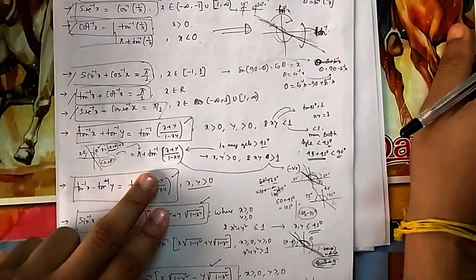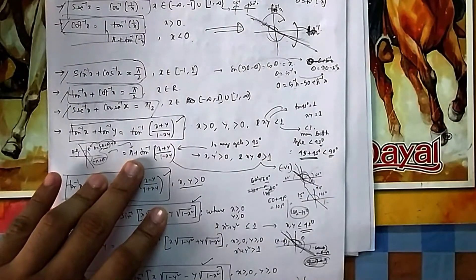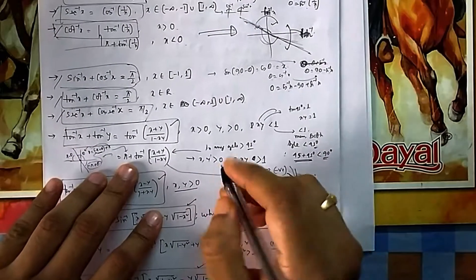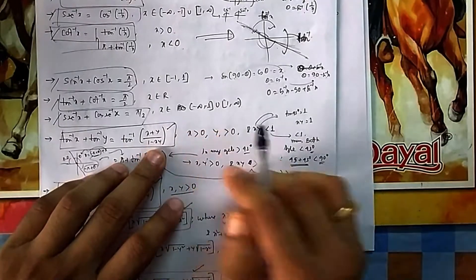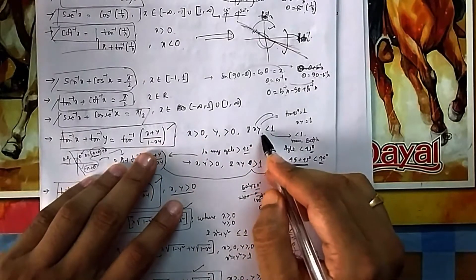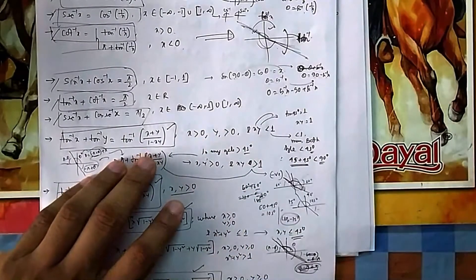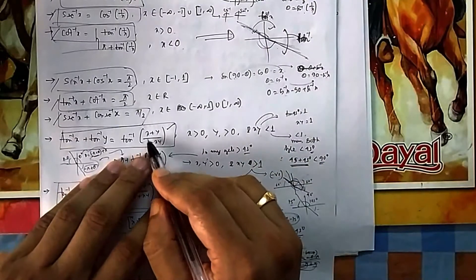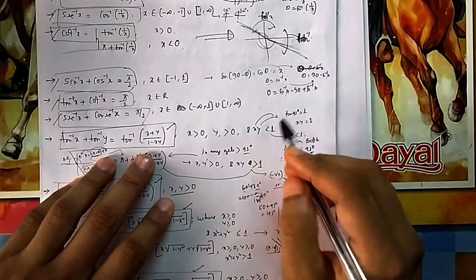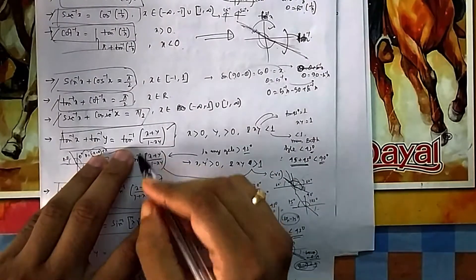But for advanced and intermediate level, you need one more condition. It is valid when x > 0, y > 0, and xy < 1. If xy < 1, the denominator remains positive. But what happens if xy > 1? Then it becomes negative. So tan⁻¹ of a negative value — which quadrant will give that answer?